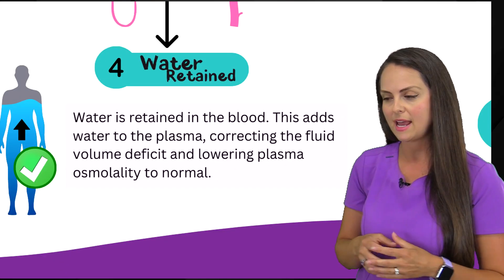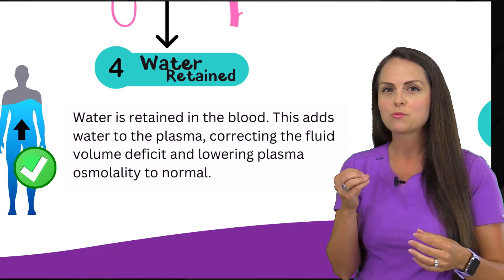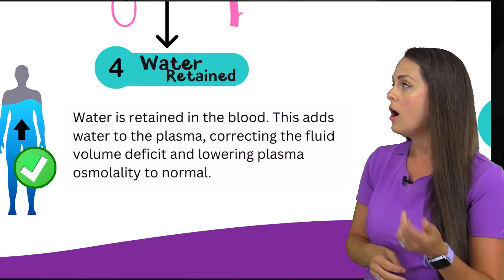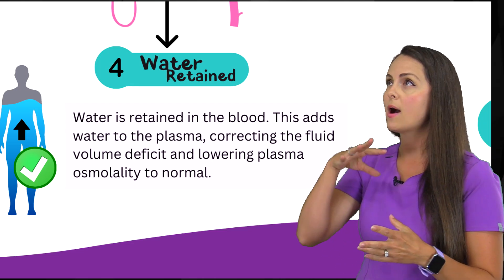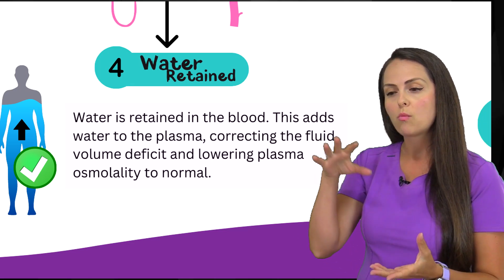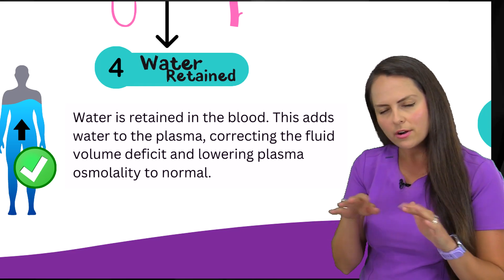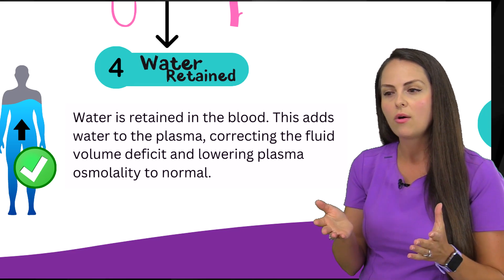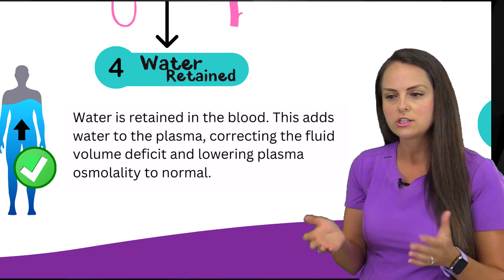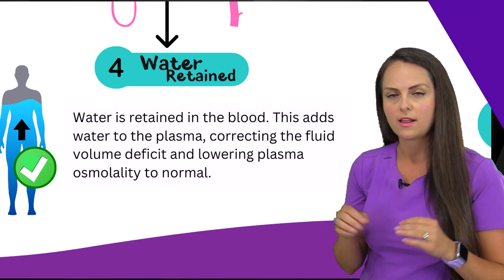Water is going to be retained, and when we retain this water it's going to help our plasma osmolality. Instead of being so high in solutes, we add water back to it, watering it down just a little bit to even out the water-to-solute concentration and normalize the osmolality.